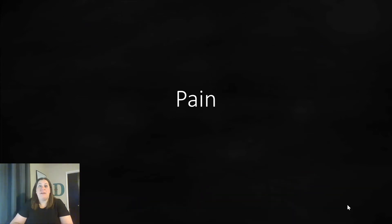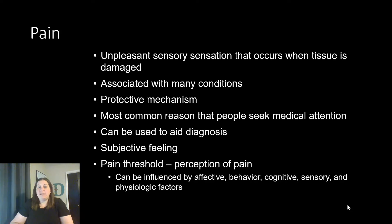Let's talk about a topic that a lot of us wish we didn't have to deal with — pain. We're going to talk about what pain is, the different types of pain, and some ways to hopefully treat it. Pain is an unpleasant sensory sensation that occurs when tissue is damaged. When tissue gets damaged, chemicals are released which stimulate receptors called nociceptors — those are the pain receptors — and they send a signal to the brain that pain is present. The brain then helps determine what kind of pain you're dealing with.